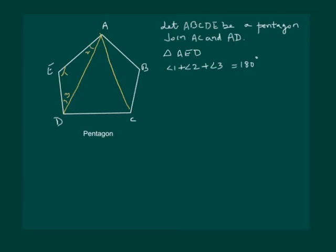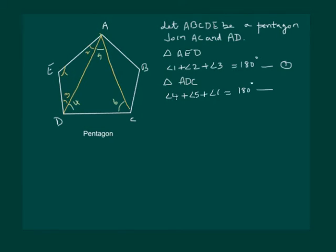Mark this as equation 1. Now take triangle ADC. Then angle 4 plus angle 5 plus angle 6 is equal to 180 degrees. Mark this as equation 2.